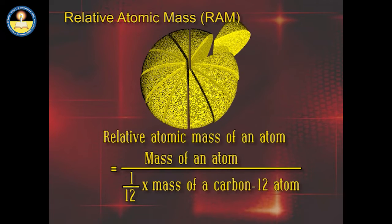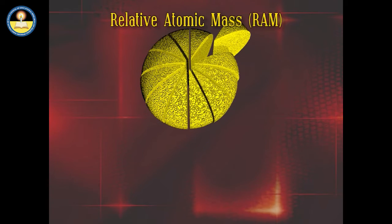Relative Atomic Mass is equal to the mass of an atom divided by 1/12th of the mass of one carbon-12 atom. Let us explain Relative Atomic Mass with the help of an example.